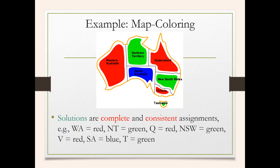Now here is the solution. WA is assigned red. Since WA is red, NT and SA cannot be red — so NT is green and SA is blue. Since NT is green and SA is blue, Q must be red. Since SA is blue and Q is red, NSW should be green. Then V, neighboring SA and NSW, is assigned green. These are the complete and consistent assignments that form the solution.